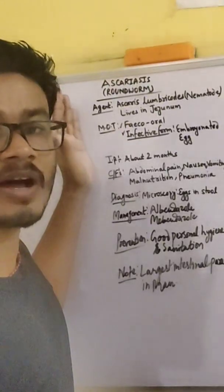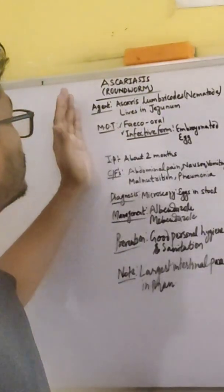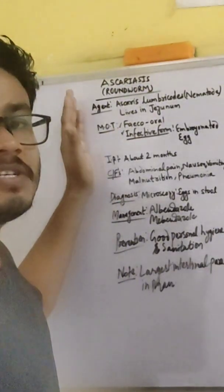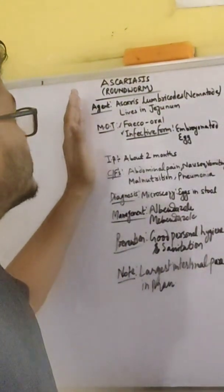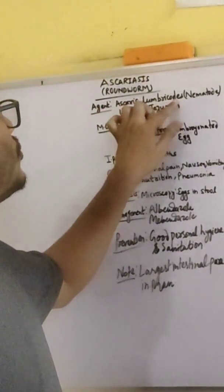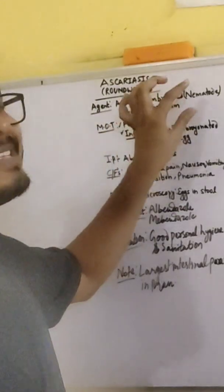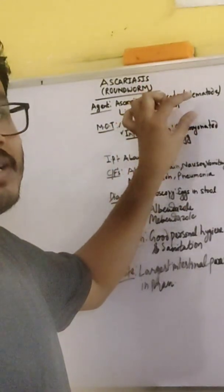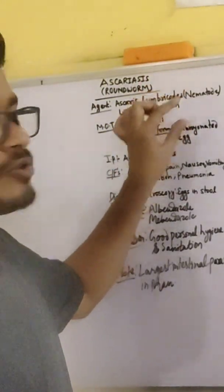Ascariasis is also called roundworm infection. So what is the causative agent of Ascariasis? It is Ascaris lumbricoides. It is a nematode.